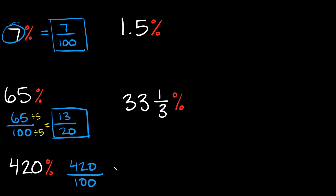We can reduce this fraction. A little trick: whenever both of your numbers end in 0 — the top number ends in 0 and the bottom number also ends in 0 — you can actually just cross those zeros out. Then all we'd be left with is 42 over 10, which is a little easier to work with.